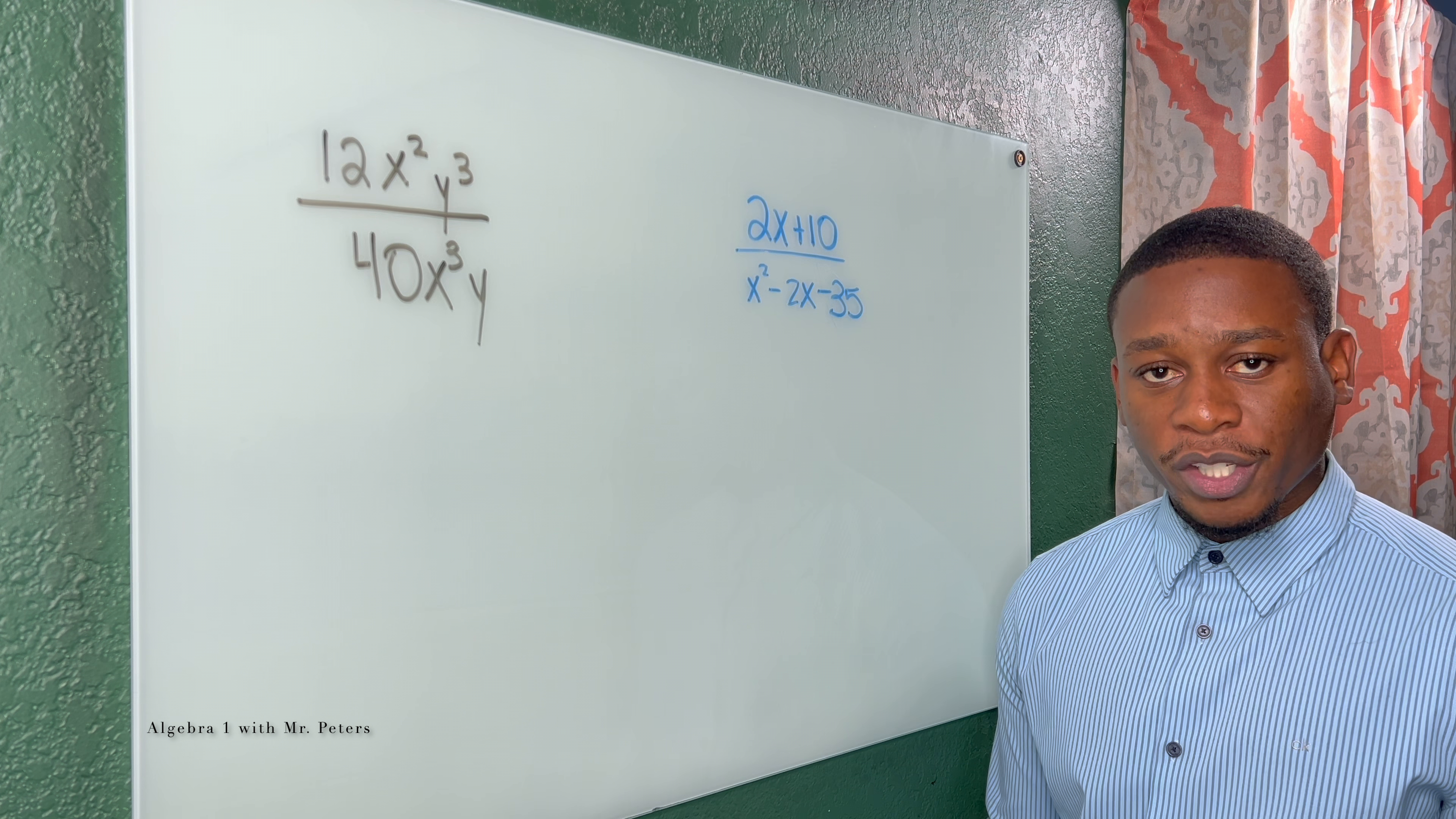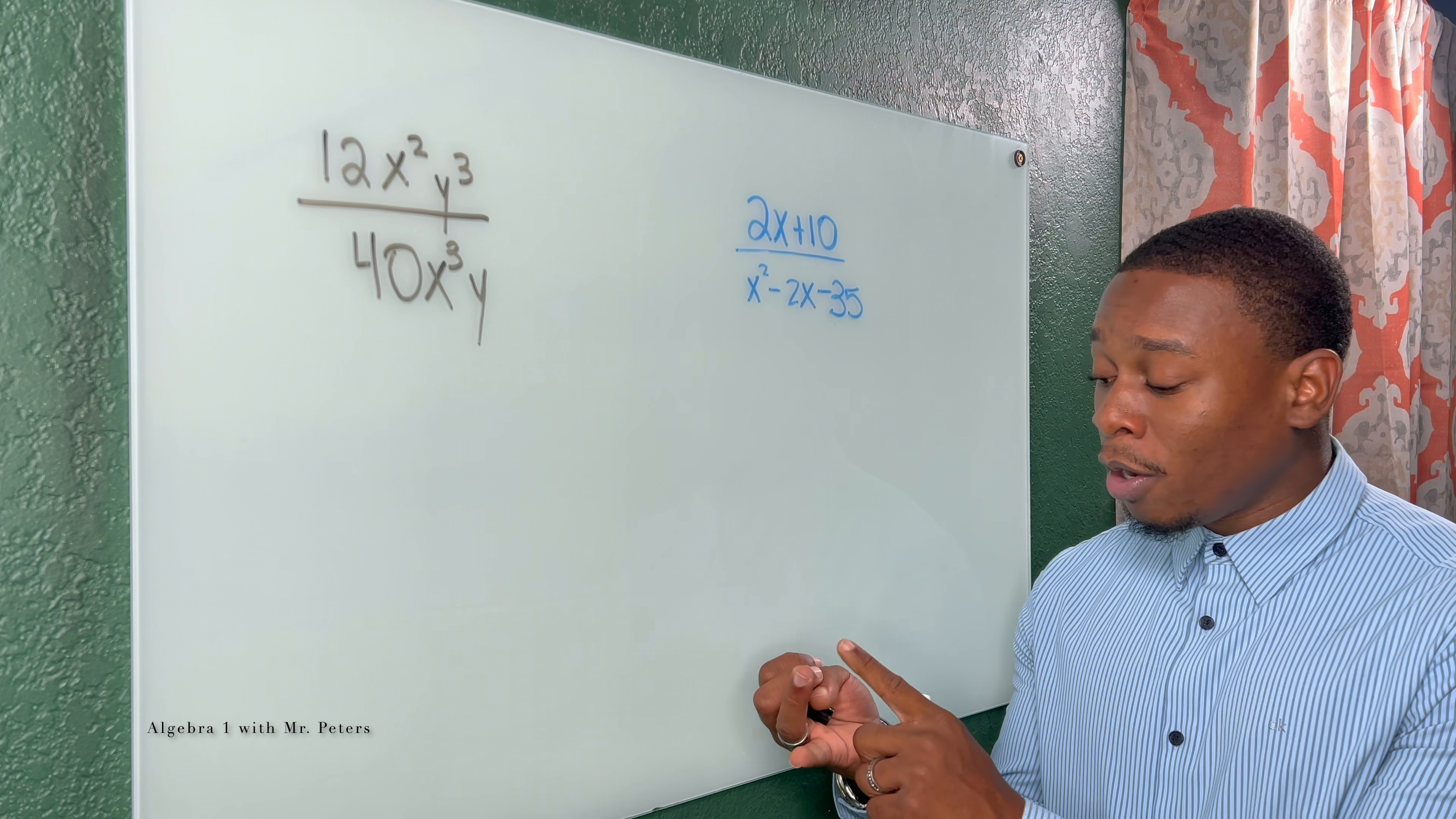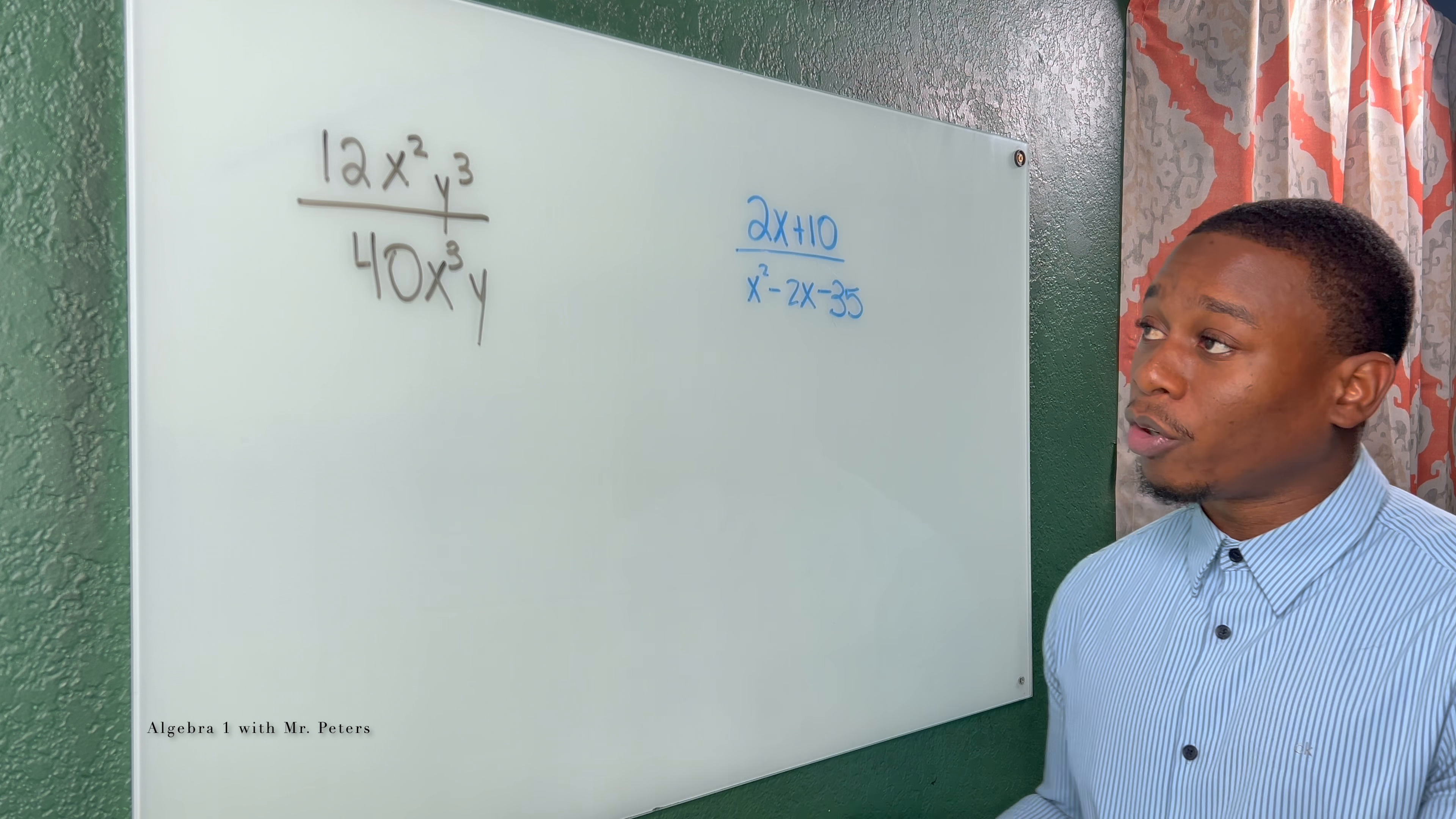When we're dealing with rational expressions, we have to remember that this is a combination of exponent rules, fraction rules, and factoring rules.